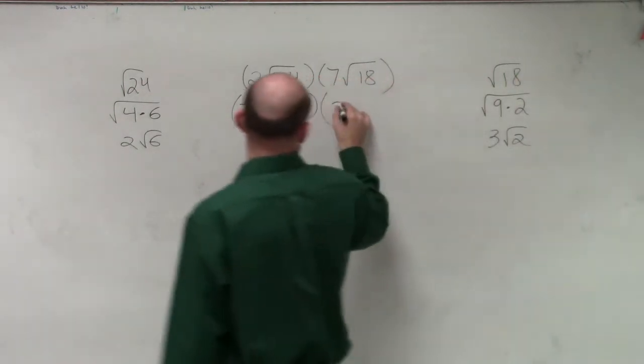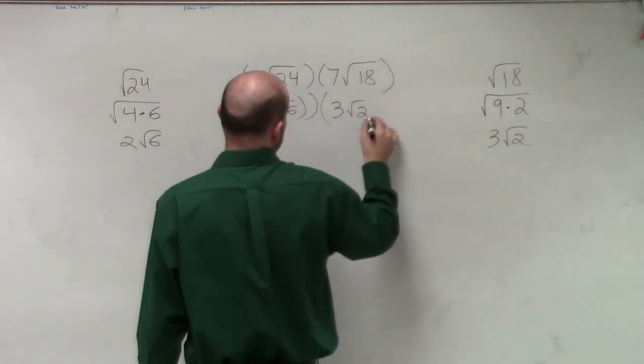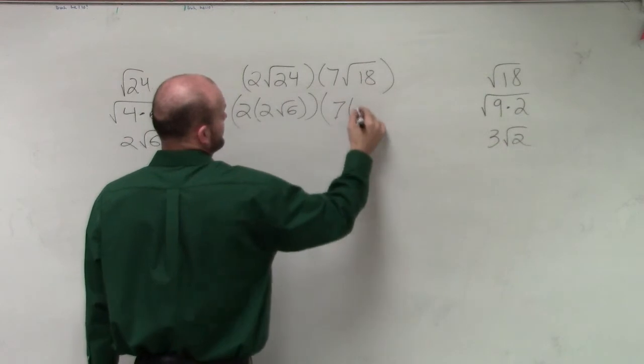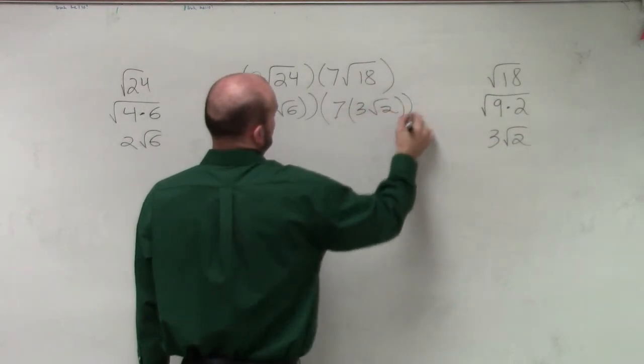So therefore, I can write this as 3 square root of 2. I'm sorry, 7 times 3 radical 2, all right?